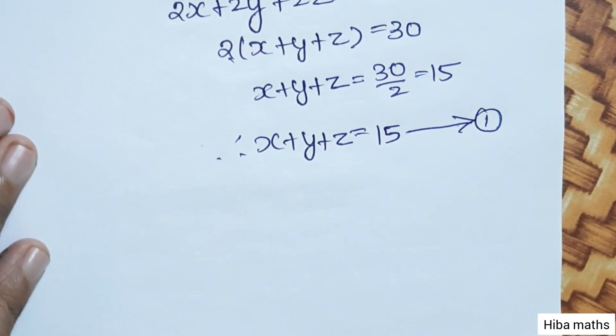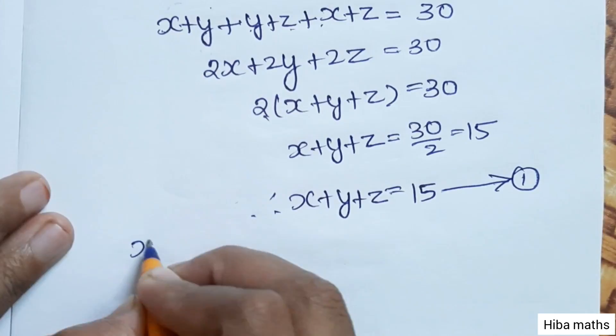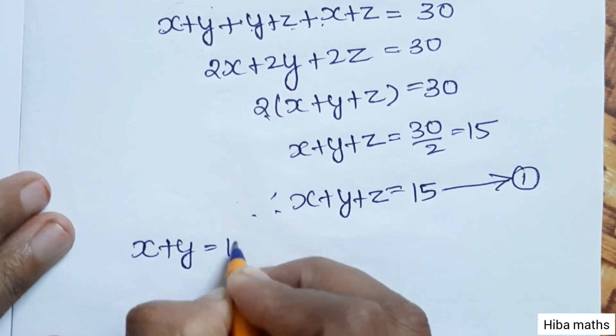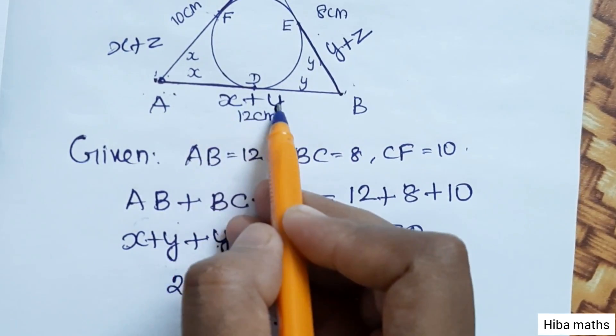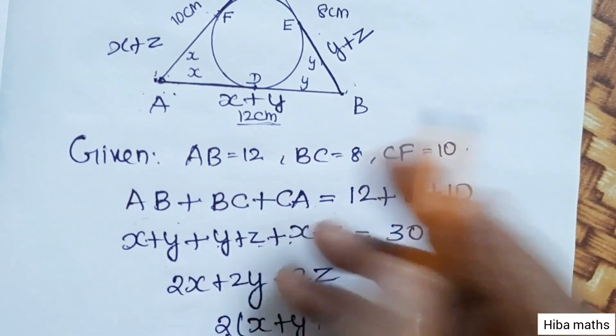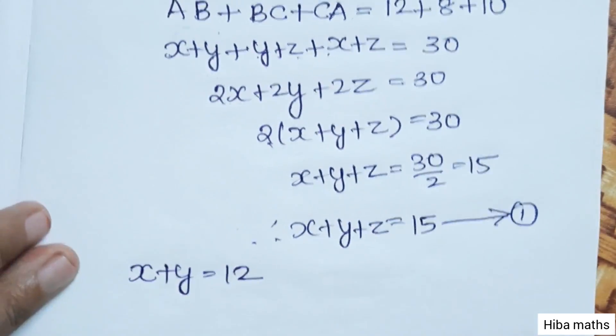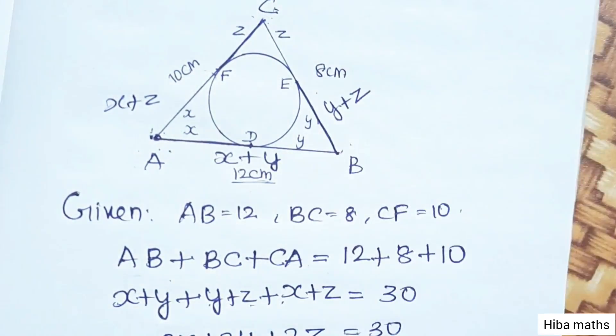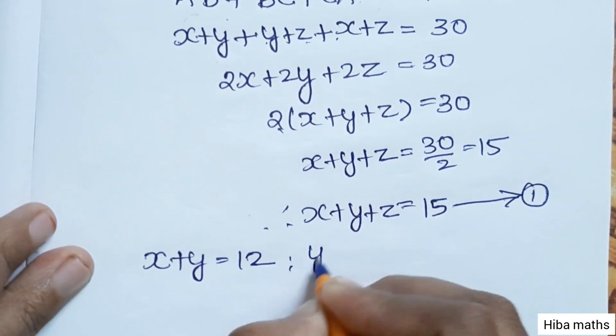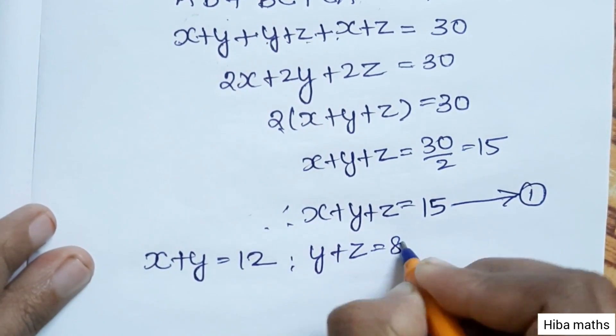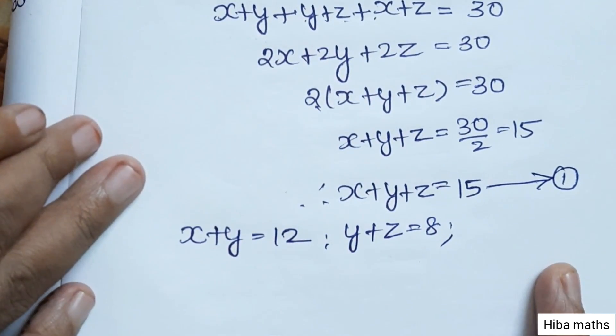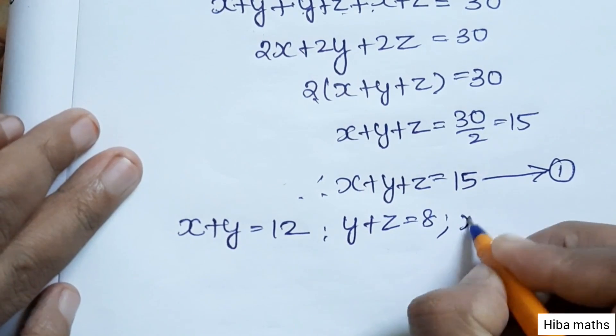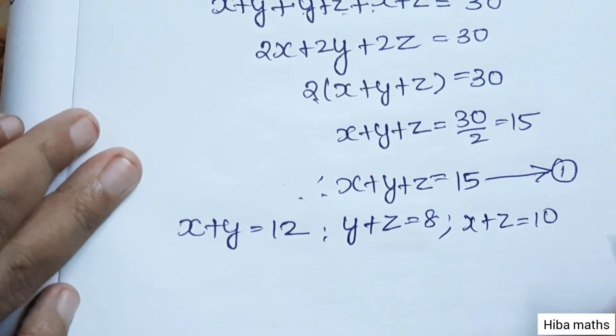If we solve the same thing, we can solve it very easily. x plus y equals 12. Full length x plus y equals 12. y plus z equals 8. x plus z equals 10.